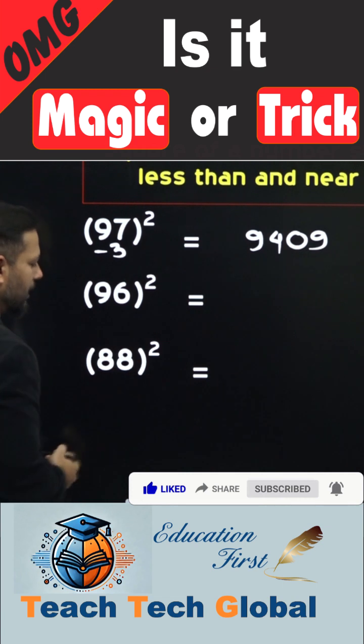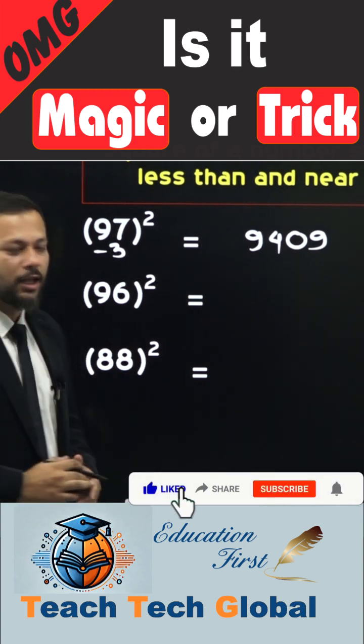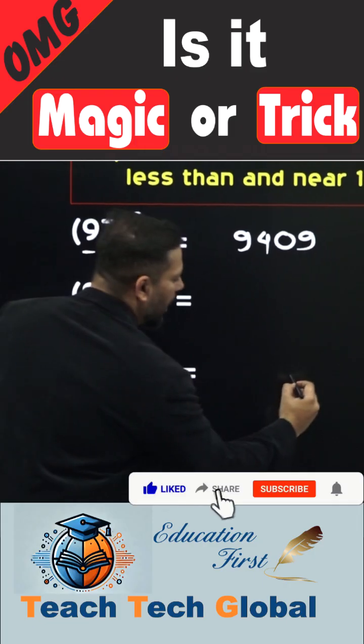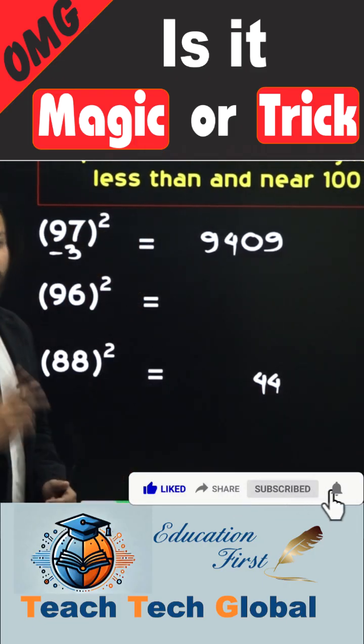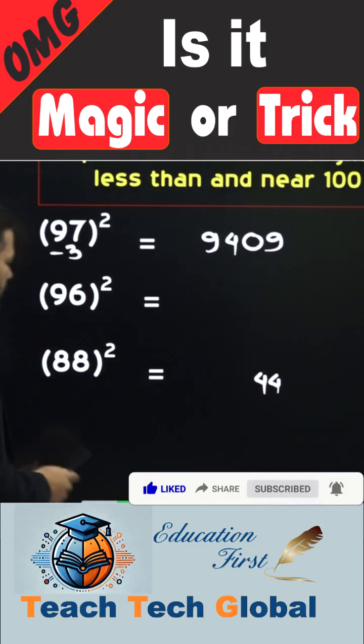Similarly, let us solve it for 88. 88 is 12 less than 100. So we will write the square of 12 as 144, but remember we can have only 2 digits.